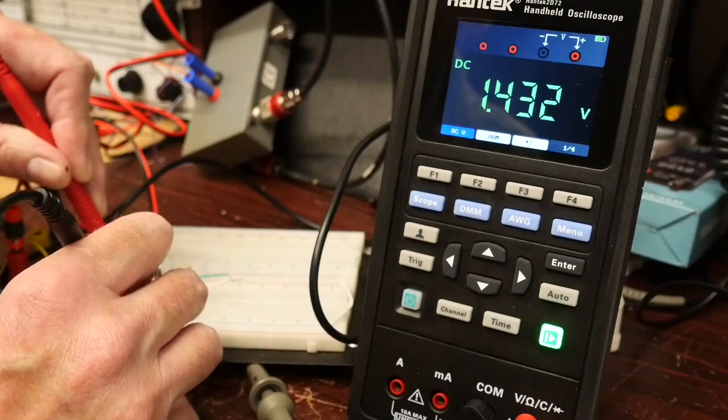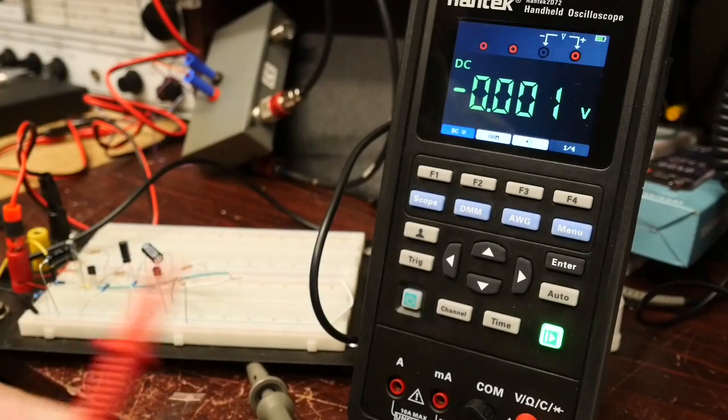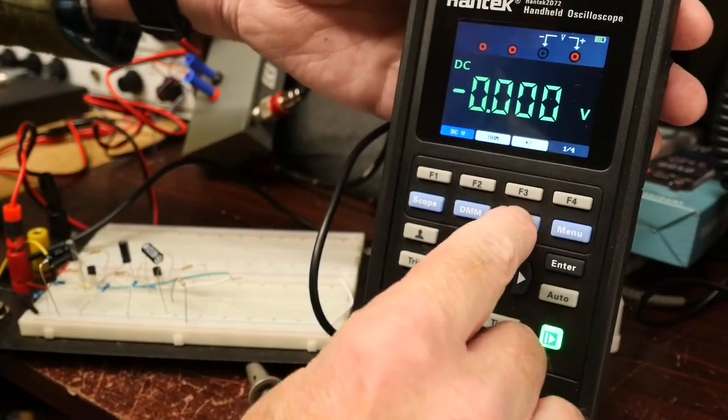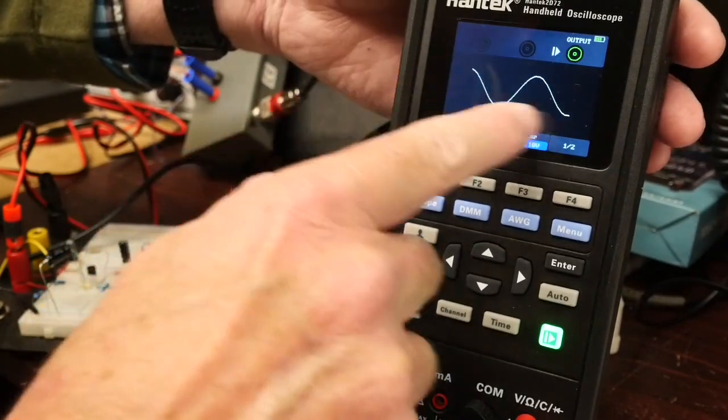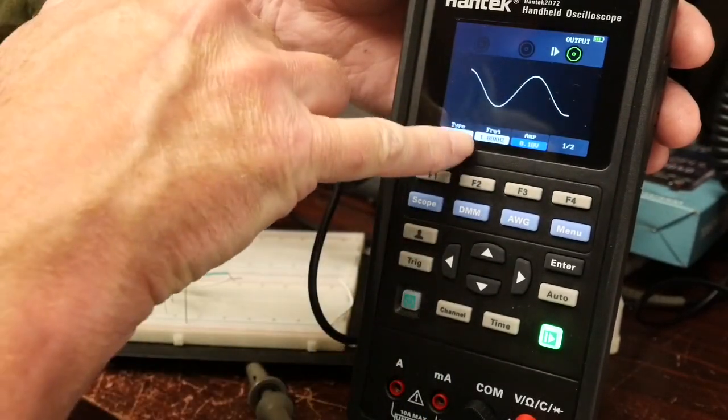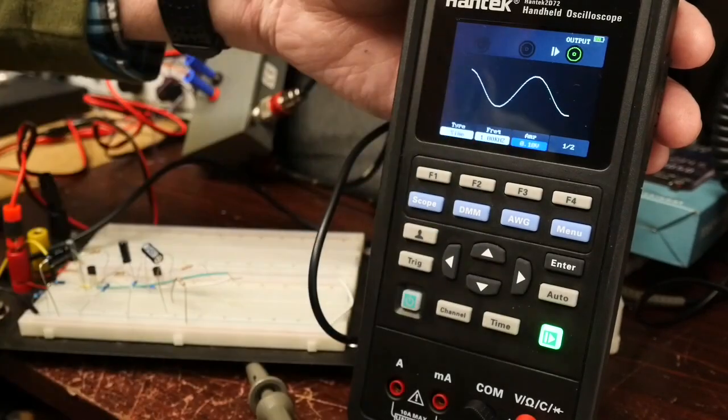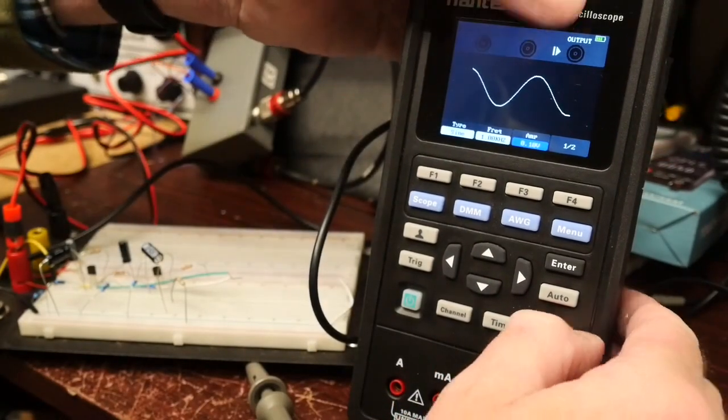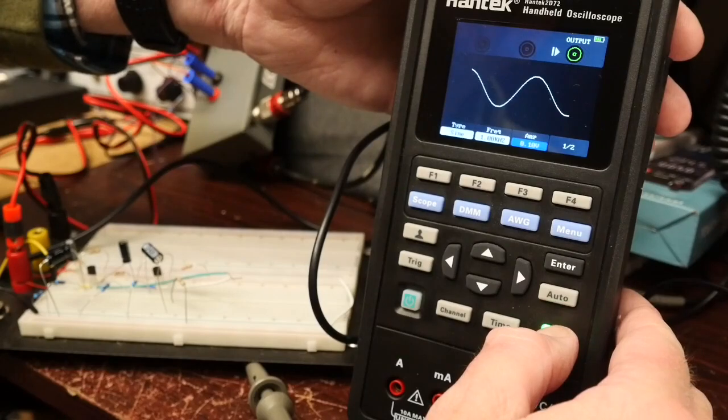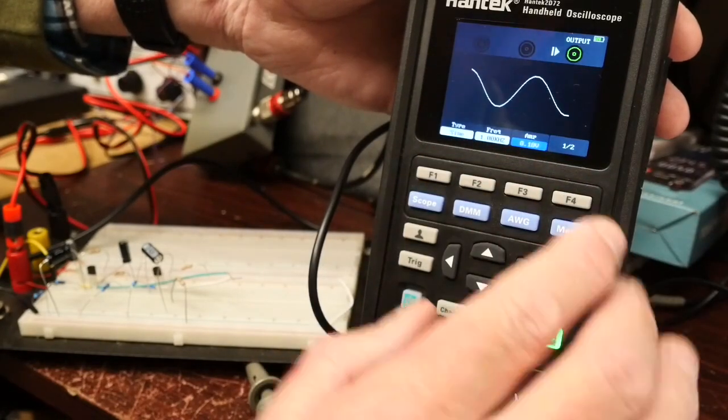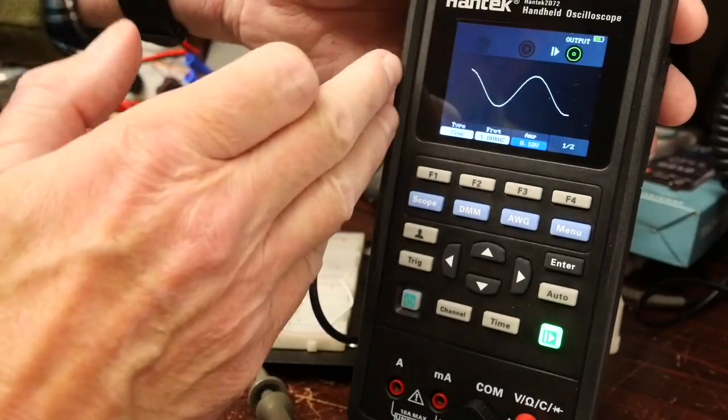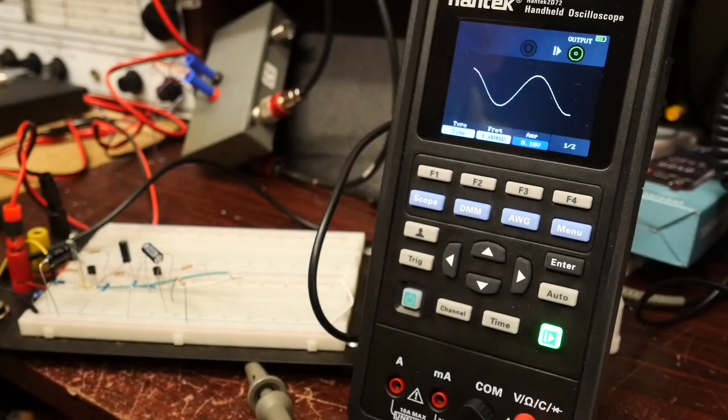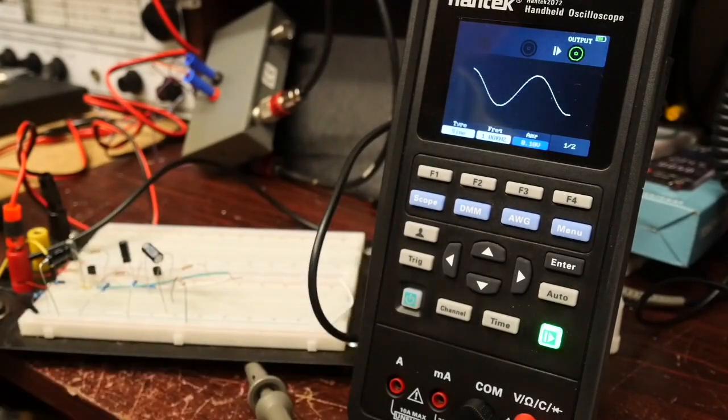Next thing we need to do is move over to arbitrary wave generator mode. As you can see, I've asked the generator to produce a sine wave. It's at one kilohertz and it's at 0.1 volts, so 100 millivolts peak to peak. When you press the start and stop button, you might see the output develops a little green pair of concentric circles that says it's on and enabled. So the 2D72 is now producing that sine wave, being fed into the input of the amplifier.